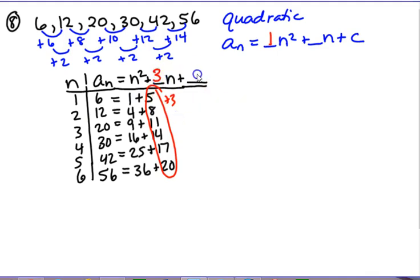Then to figure out what the second number is, the constant, I can just do an example. I know when n is 1, that a sub 1 should give me 6. So a sub 1, so far my rule said, would be 1 squared plus 3 times 1, and then plus a constant. I'll just call that c.